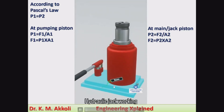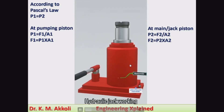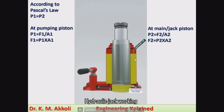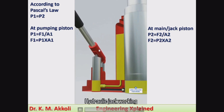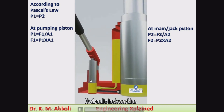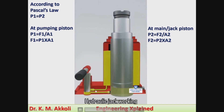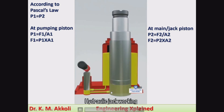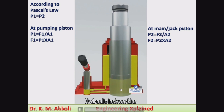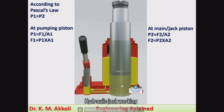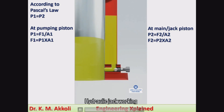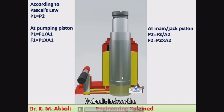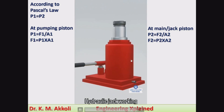The hydraulic jack consists of a base and main body which also serves as the reservoir, where hydraulic oil is stored. The hydraulic oil flows to the pumping piston through the check valve during its upward motion. During the downward motion, the fluid is pressurized and flows through a non-return valve to the main piston or jack piston, lifting the load with a larger force. Once done, opening the check nut valve allows fluid to flow from the jack piston back to the reservoir.